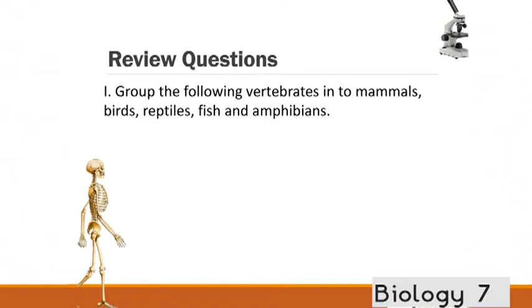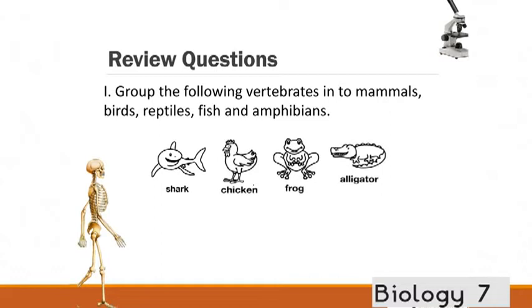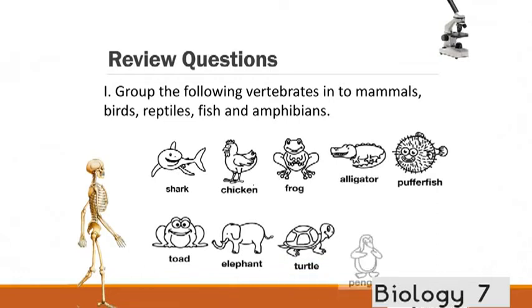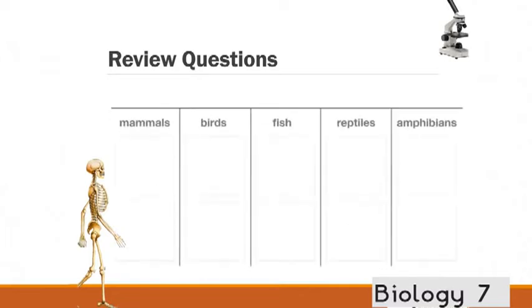Now let's just do a few review questions. Group the following vertebrates into mammals, birds, reptiles, fish and amphibians. We've got a shark, chicken, frog, alligator, pufferfish, toad, elephant, turtle, penguin and a dolphin.